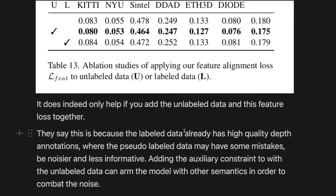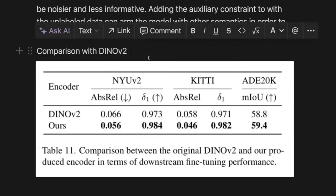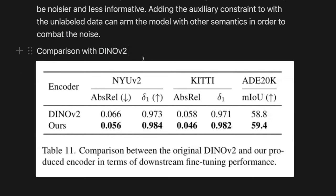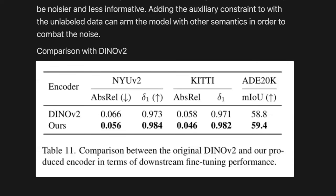They say this is because the labeled data already has high quality depth annotations, while the pseudo-label data may have some mistakes and be noisier, but adding this auxiliary constraint to the unlabeled data can arm the model with other semantics to combat the noise. They also compare to DINOv2 directly — since DINOv2 could do depth estimation out of the gate — and it improves on all tasks. The technique of not letting the model drift too far from the original while adding synthetic data seems to be a pattern we're seeing over and over again, whether it be DPO or these other techniques.